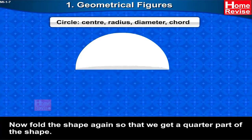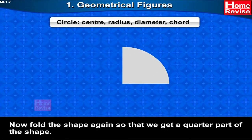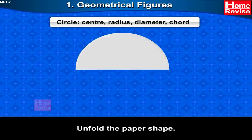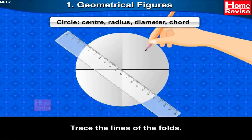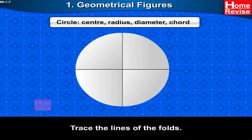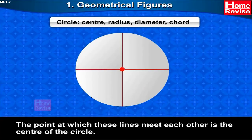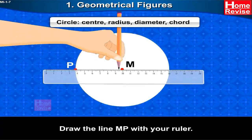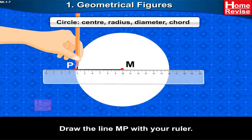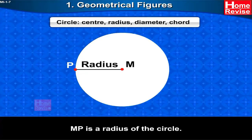Now fold the shape again so that we get a quarter part of the shape, then unfold the paper. You will see the circular shape again — trace the lines of the folds. The point at which these lines meet each other is the center of the circle. Name the center of the circle M. Take any point P on the circle and draw the line MP with your ruler. MP is the radius of the circle.